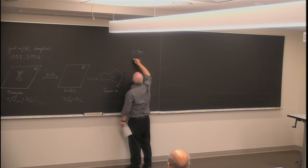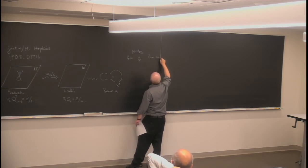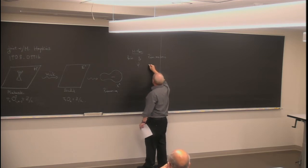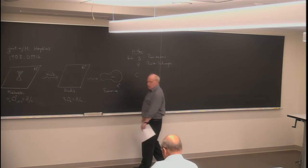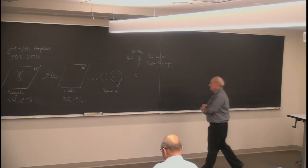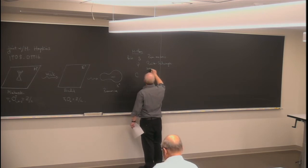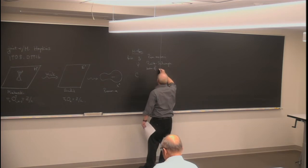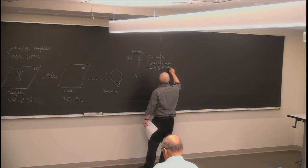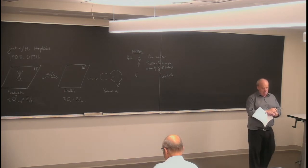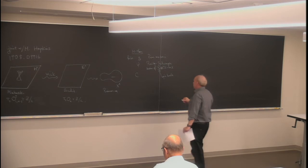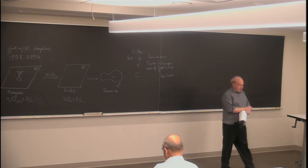M-theory has three fields: G, the Riemannian metric; Psi, the Rarita-Schwinger field; and C, which is at least locally a three-form. Psi is a section of S tensor TX, where S is a spin bundle. To formulate that, we need some sort of spin structure, but since we're on an unoriented manifold, we need the version of spin for unoriented manifolds, which is Pin. There are two kinds of Pin, corresponding to two kinds of groups covering the non-identity component of the Lorentz group.